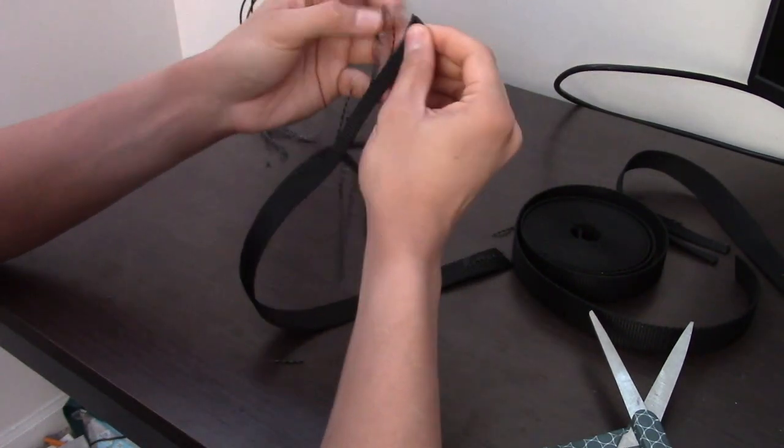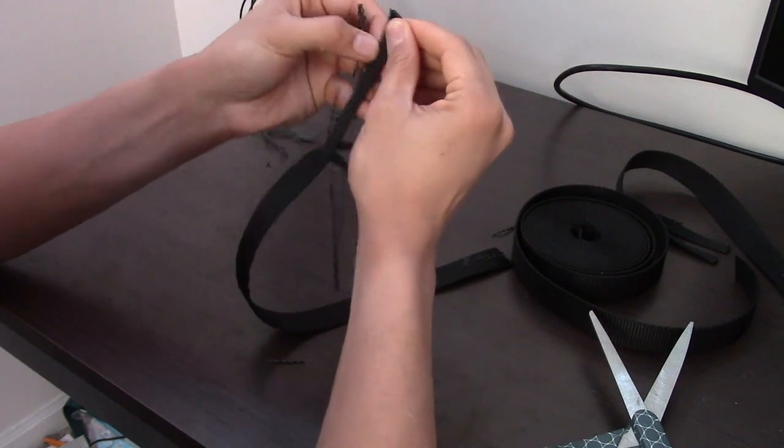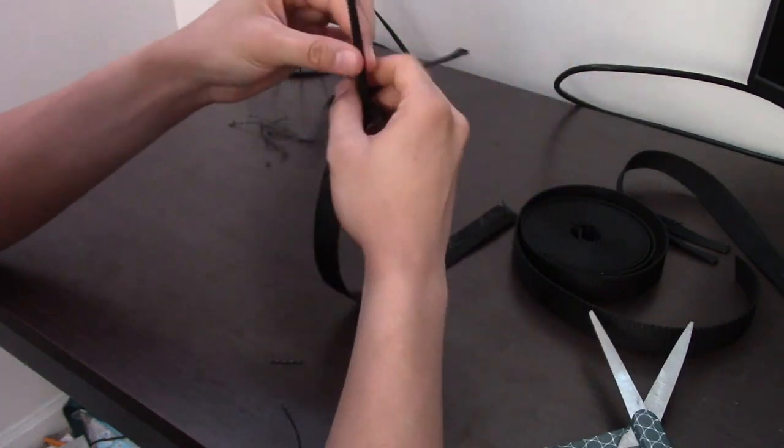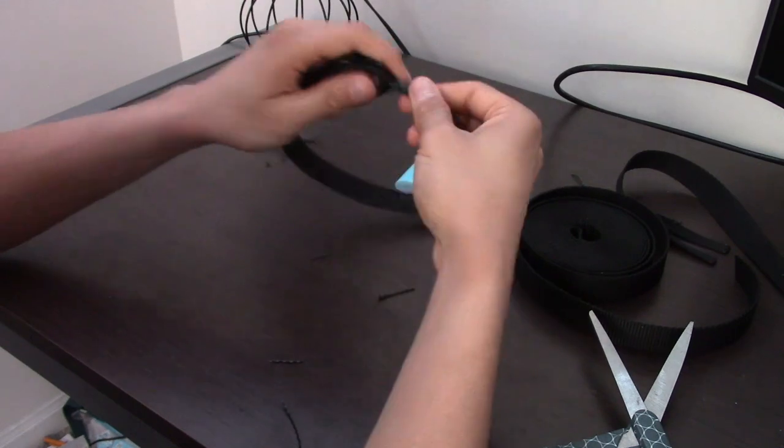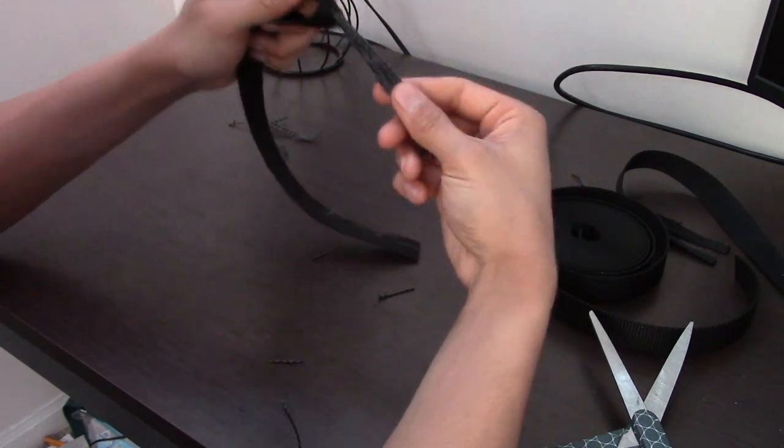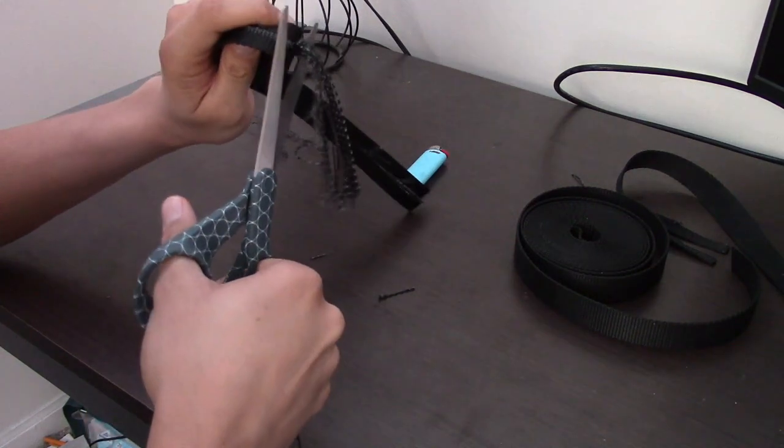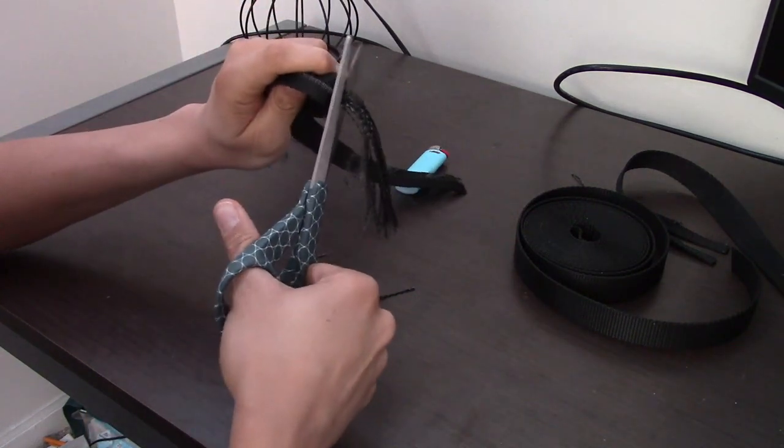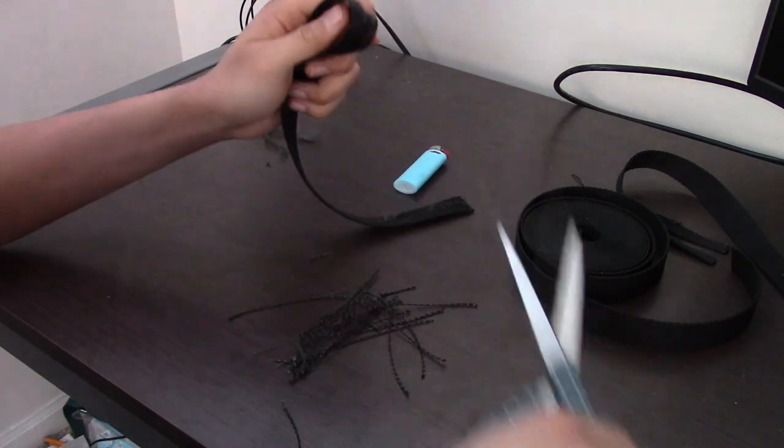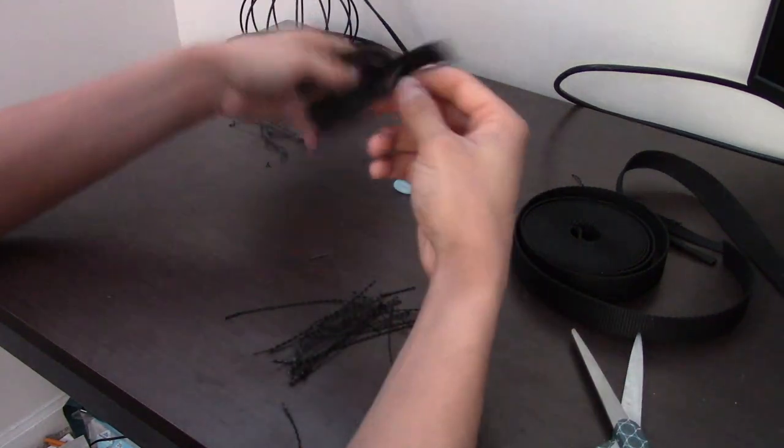So then what you're gonna want to do is you're gonna want to do that to both sides. Alright, so now you're gonna have all this extra strap. What you're gonna want to do is you're gonna want to grab your scissors and you're gonna want to cut this like that and then do the same thing on the other side.